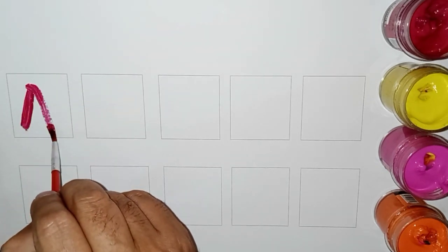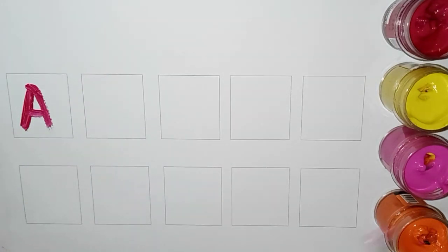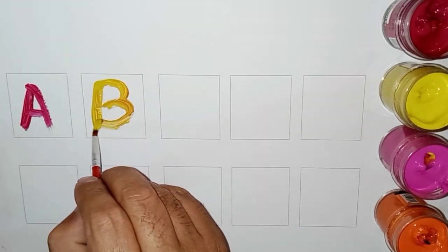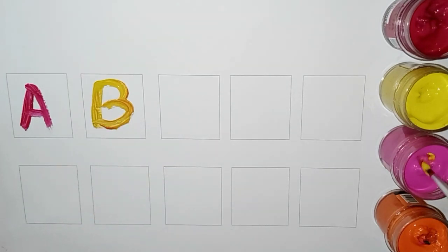Apple. Very good. A for Apple, red color. Which color? Yellow color. B, very good, B for Ball, pink color. C...